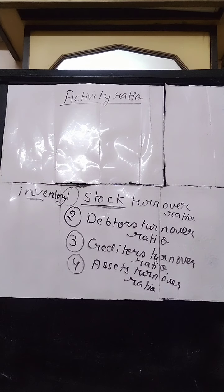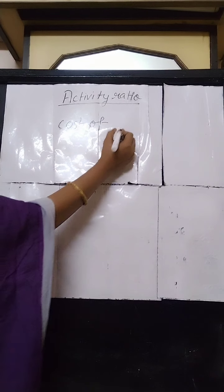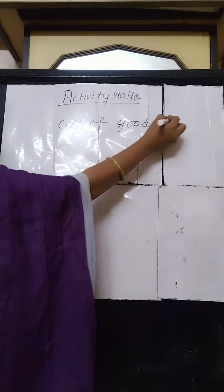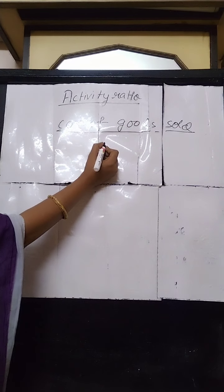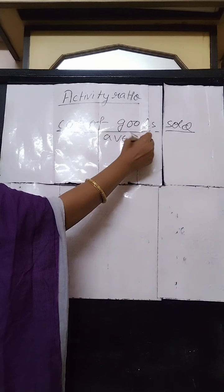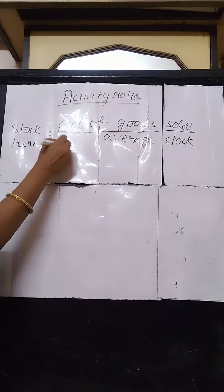So first we will learn today how to find out the stock turnover ratio. The formula of stock turnover ratio is: cost of goods sold divided by average stock, or average inventory. This is the formula of stock turnover ratio — cost of goods sold by average stock.